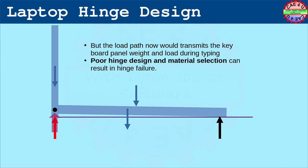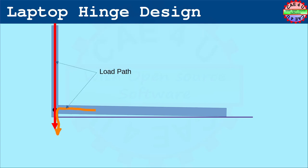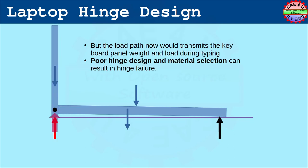This brings us to an important concept of load path. The modified load path can raise the hinge load significantly reducing its reliability. Further, it can create weak links if the stresses are not adequately considered.